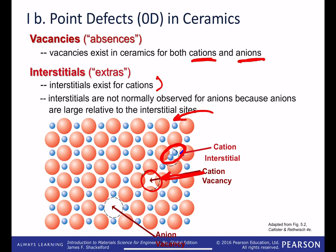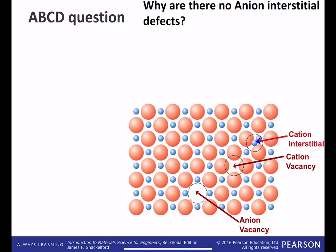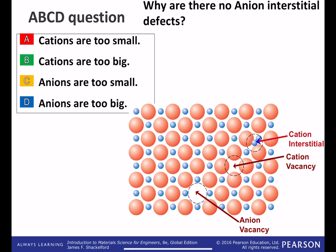So that's possible. We can also have anion vacancies. So we're missing the red anion in this lattice here. And the last question we have for you is, what about anion interstitials? So thinking about this, see if you can ask this question. Pause the video once you have an answer. So why are there no anion interstitials commonly?